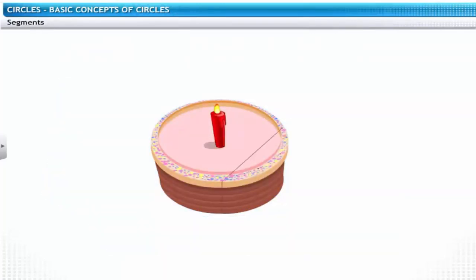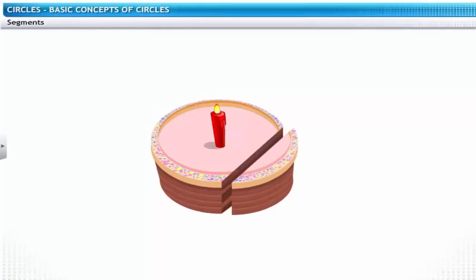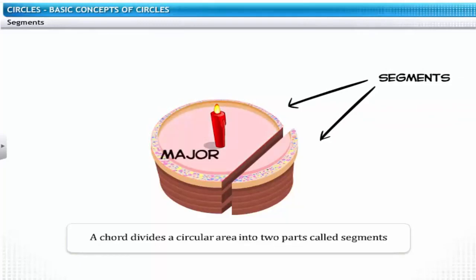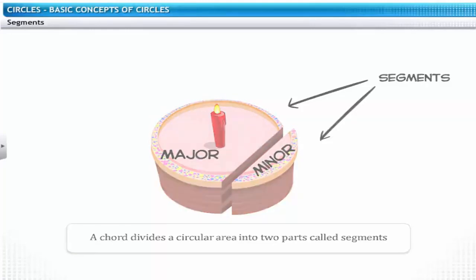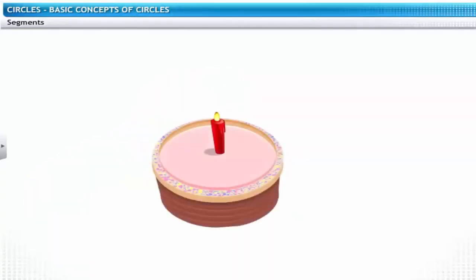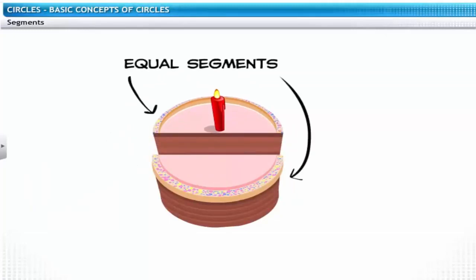How do you cut a cake? One way is to just cut across it, like drawing a chord. A chord divides a circular area into two parts called segments. The larger part is called the major segment and the smaller part is called the minor segment. You would obviously prefer the major segment as your share of the cake. A diameter divides a circle into two equal segments.